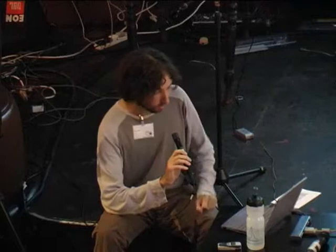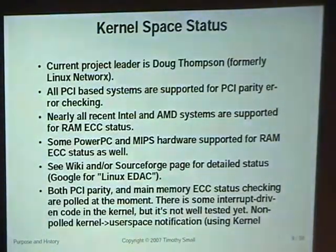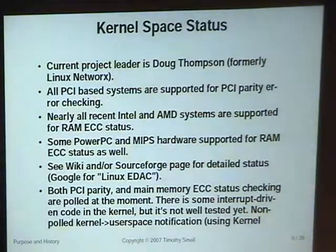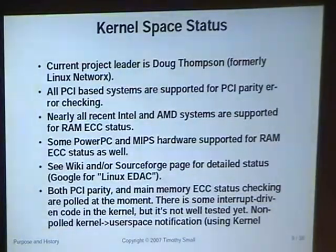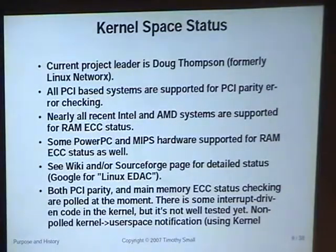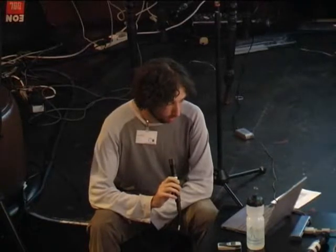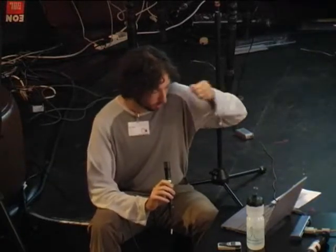A guy called Doug Thompson, who used to work for Linux Networks — they sell Linux clusters — did the kernel space stuff. Pretty much every PCI-based system, from a little ARM-based slug up to some monster thing with 18 PCI buses, is supported for PCI error checking. For RAM, about 90% of recent machines with ECC RAM are supported for error checking on x86, and a few PowerPC and MIPS things are starting to be supported as well.